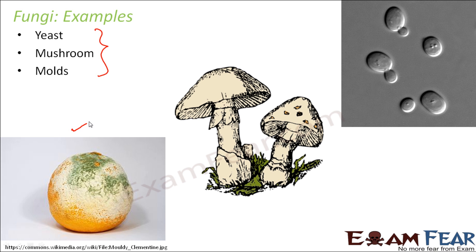If you talk about molds, you would have seen it the way you are seeing it on the screen. If you keep an orange or any other fruit at room temperature without refrigerating it for quite a few days, what happens? You see a white layer being formed on the surface of the fruit. This layer is due to the growth of fungi, and these fungi specifically are molds.